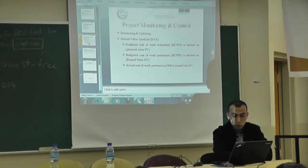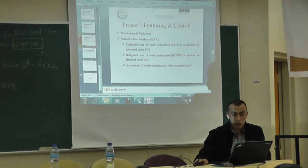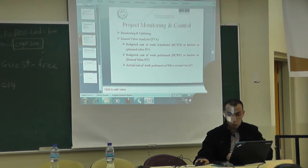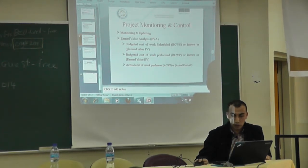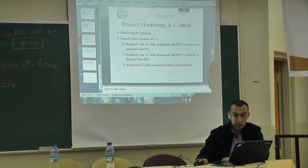To perform earned value analysis, we need to determine three values: budgeted cost of work scheduled (planned value), budgeted cost of work performed (earned value), and actual cost of work performed (actual cost). After calculating these three values, we determine two important additional values. The first is SV or schedule variance — the difference between budgeted cost of work scheduled and budgeted cost of work performed. If the work performed is greater than work scheduled, the value is positive, meaning the project is ahead of schedule. If negative, we are behind schedule. If zero, we are on schedule.